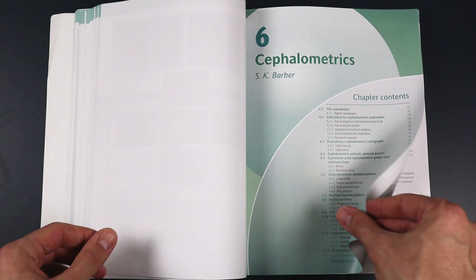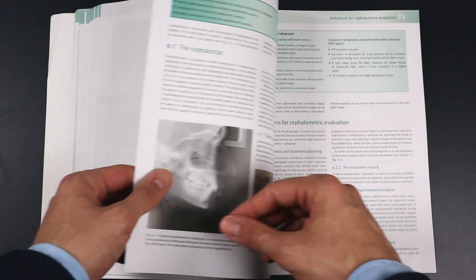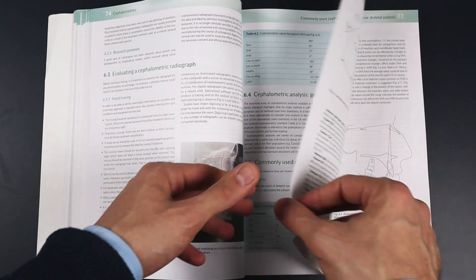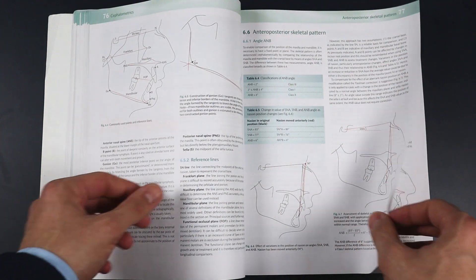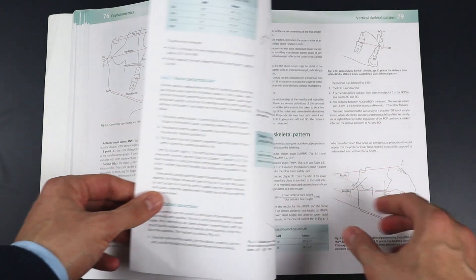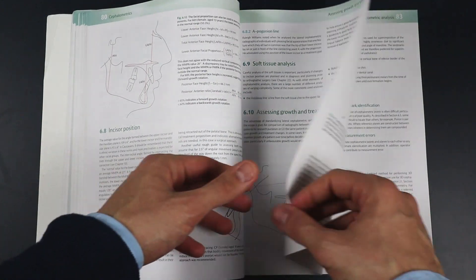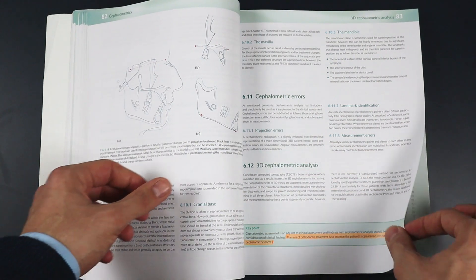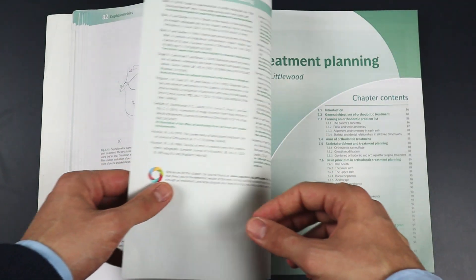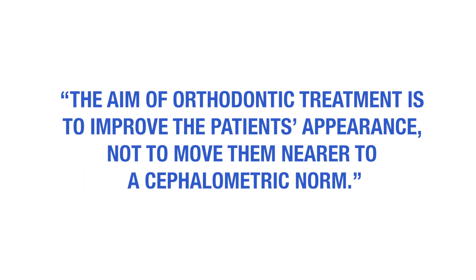I found the chapter on cephalometrics just brilliant. The author was able to cut down traditionally complex themes into a digestible piece of text and schemes that will be very helpful for young residents who often struggle with the topic. The chapter also has a beautiful conclusion: the aim of orthodontic treatment is to improve the patient's appearance, not to move them nearer to a cephalometric norm.